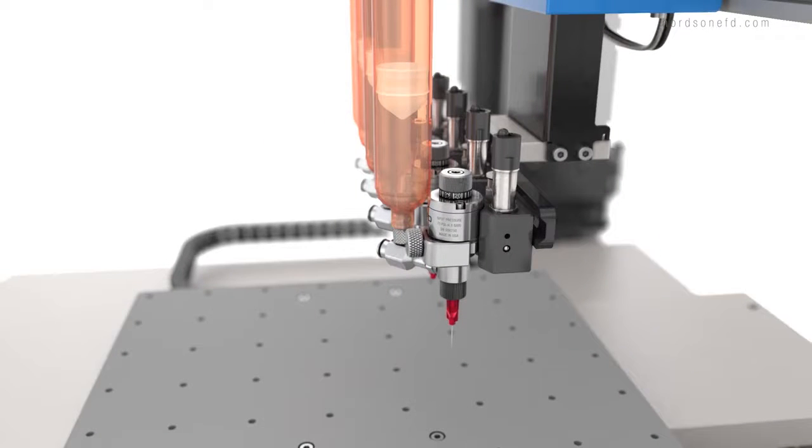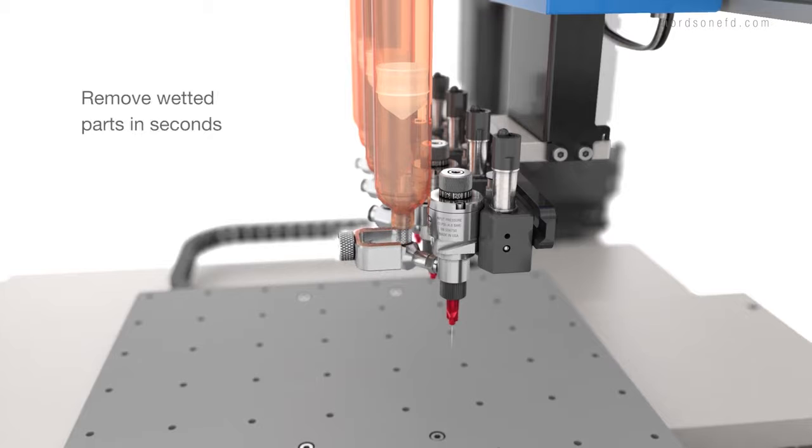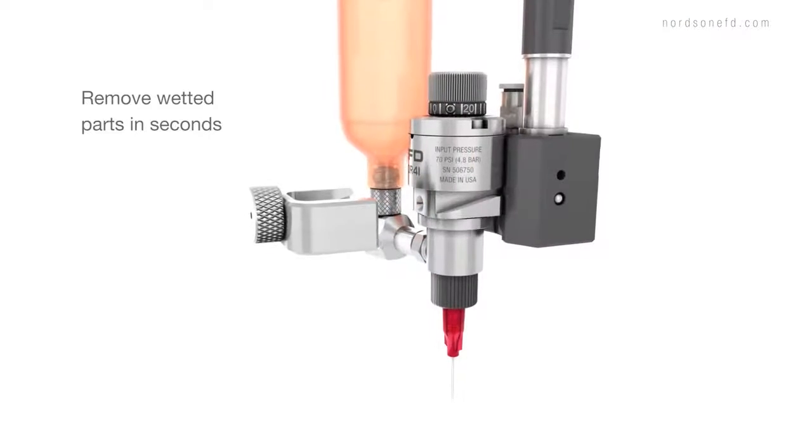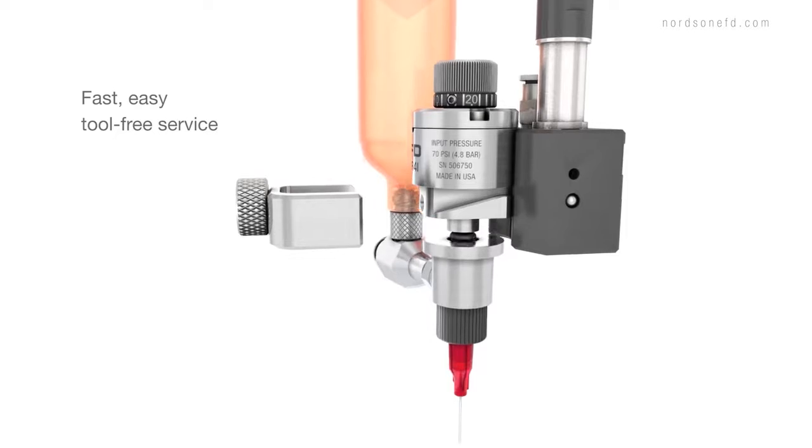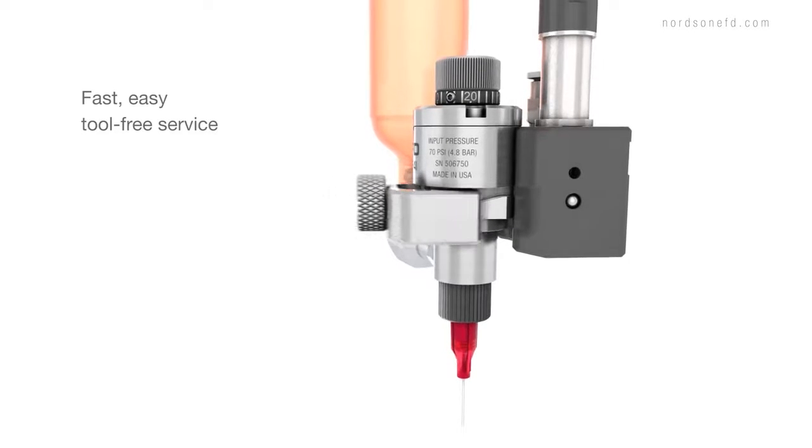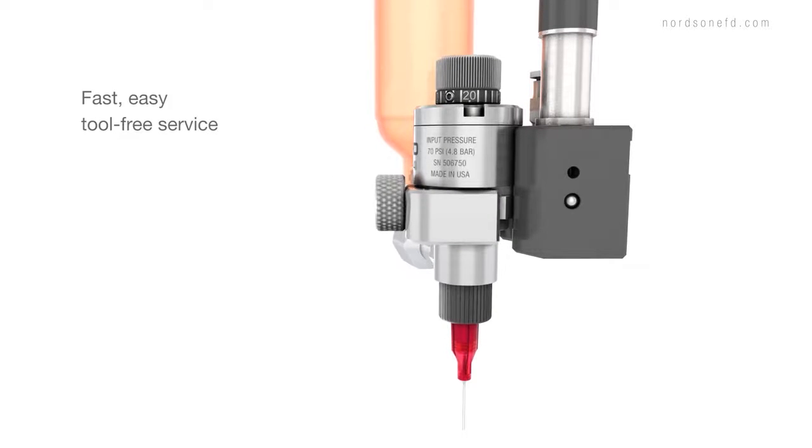Wetted parts easily disconnect from the air actuator by removing a simple, secure quick-release clasp. No bolts, no tools, no screws—full changeout of wetted parts takes seconds, not minutes.